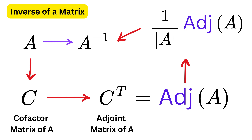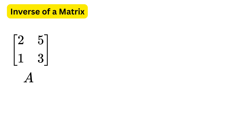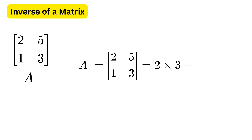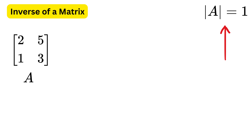Let us find the inverse of a 2x2 matrix using the adjoint method, step by step. Step 1 is to find the determinant of the matrix, which is 2 times 3 minus 5 times 1, or 1. Since the determinant is non-zero, the inverse of this matrix exists.